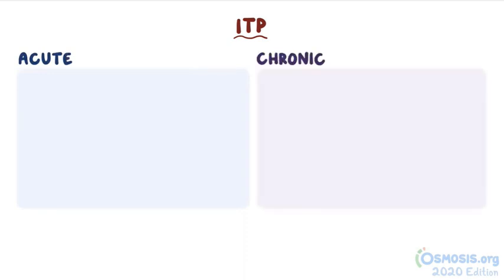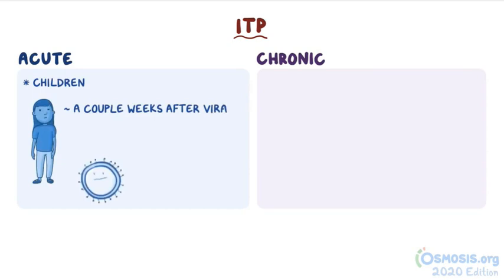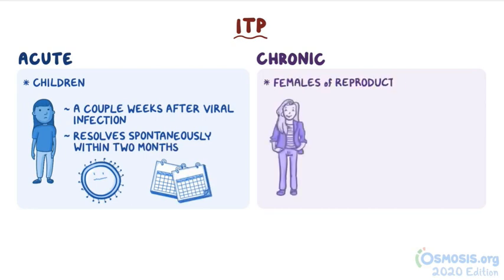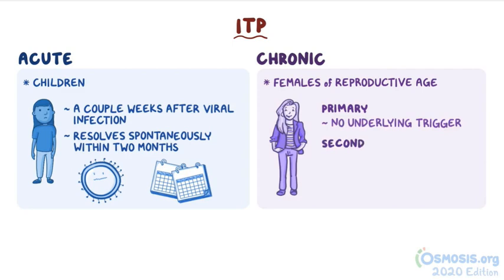ITP can be acute or chronic. Acute ITP usually affects children a couple of weeks after a viral infection and resolves spontaneously within two months. Chronic ITP usually affects females of reproductive age and persists more than six months.